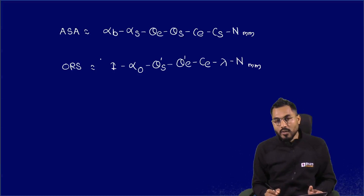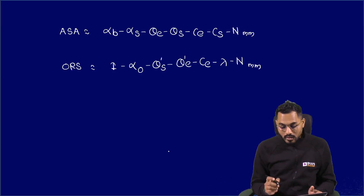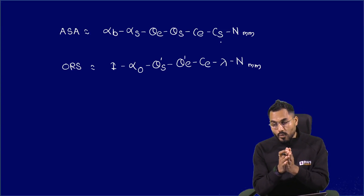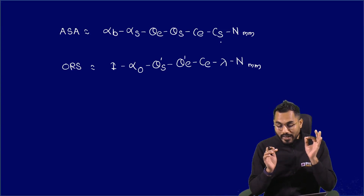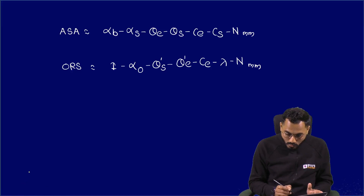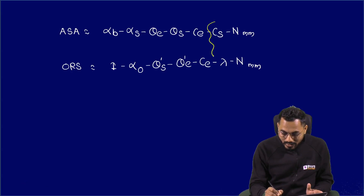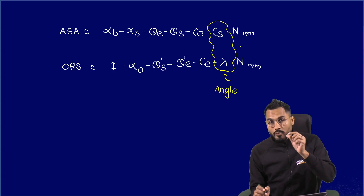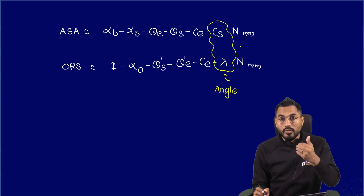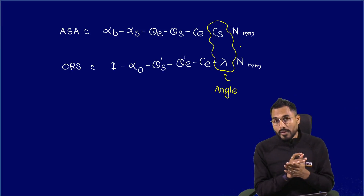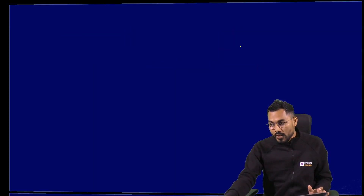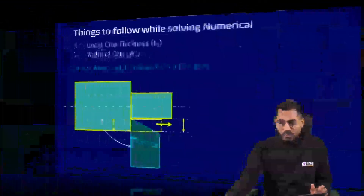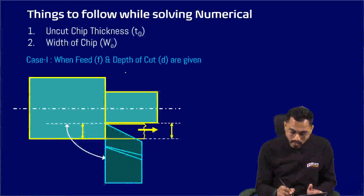All the angles are known to everybody. Now, if it is not mentioned whether it is ASA or ORS tool signature, there is one highlighting trick: just go and check what exactly is the angle given at the sixth place. We know that the seventh place is occupied by the tool nose radius in millimeters or inches, and the sixth place is occupied by one angle.